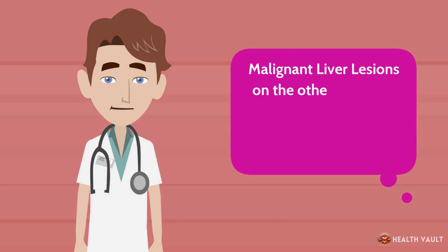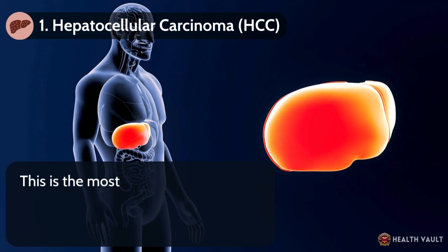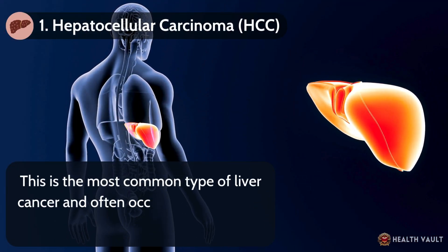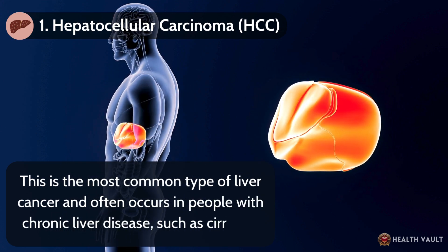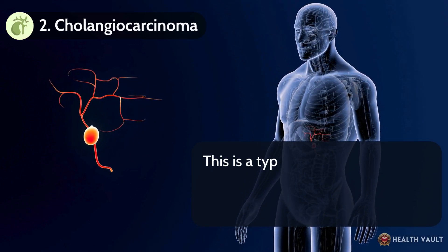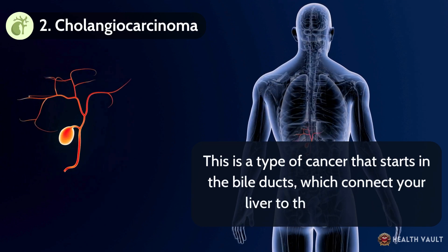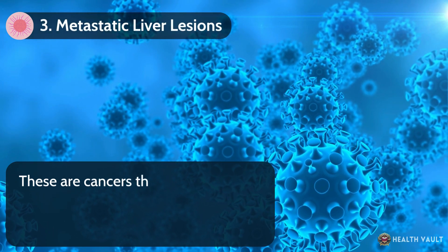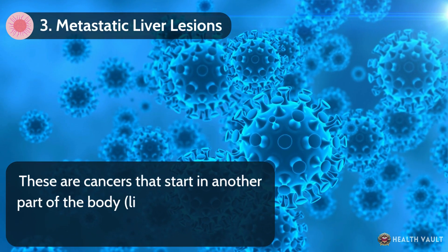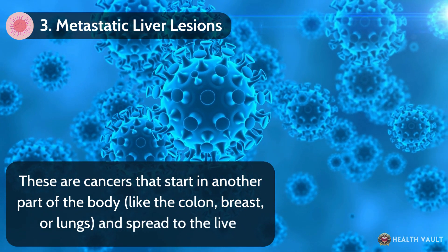Malignant liver lesions, on the other hand, are cancerous growths that can spread to other parts of the body. They include: number one, hepatocellular carcinoma — the most common type of liver cancer, often occurring in people with chronic liver disease such as cirrhosis; number two, cholangiocarcinoma — a cancer that starts in the bile ducts connecting the liver to the gallbladder; and number three, metastatic liver lesions — cancers that start in another part of the body, like the colon, breast, or lungs, and spread to the liver.